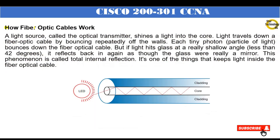How fiber-optic cables work. A light source called the optical transmitter shines a light into the core. Light travels down a fiber-optic cable by bouncing repeatedly off the walls — each tiny photon (particle of light) bounces down the cable. If light hits glass at a shallow angle less than 42 degrees, it reflects back in again as though the glass were a mirror. This phenomenon is called total internal reflection, and it's one of the things that keeps light inside the fiber-optic cable. Light enters the cable at an angle less than 42 degrees and is reflected in the forward direction, traveling to the other side of the cable.